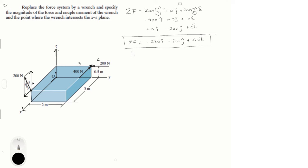Step 2: find the magnitude of that force. The magnitude is given by √(280² + 200² + 160²), and when you calculate this it is equal to 379.47 newtons. Cool, so far so good.